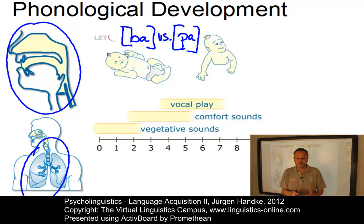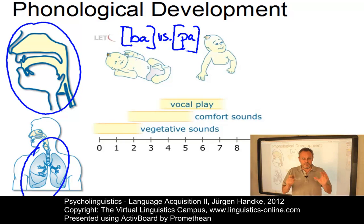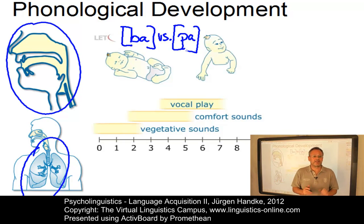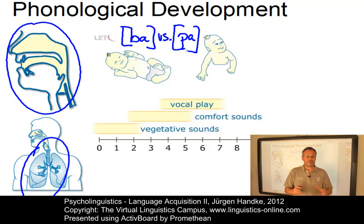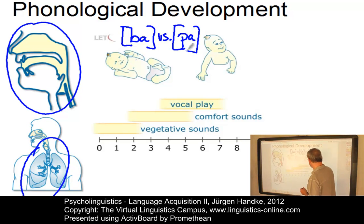With this ability they can produce almost all sounds of human language, even sounds that play no or a minor role in their target language. Exposure to adult language leads to the suppression of non-native speech sounds starting at around the age of 8 to 10 months, when most infants show initial signs of word comprehension.